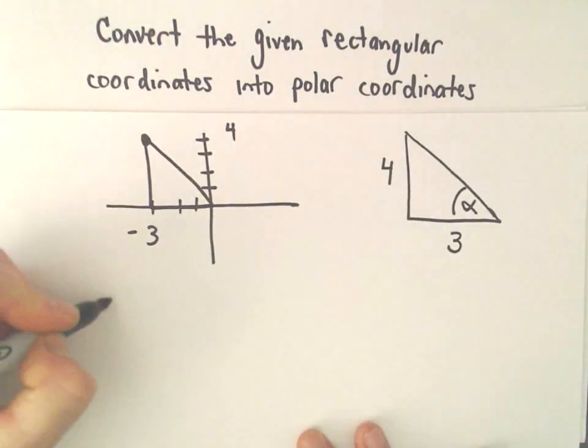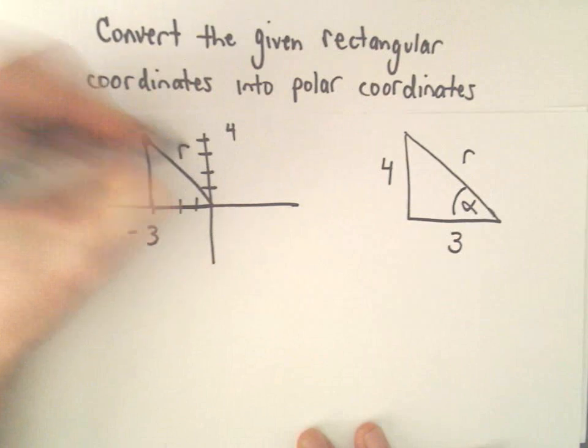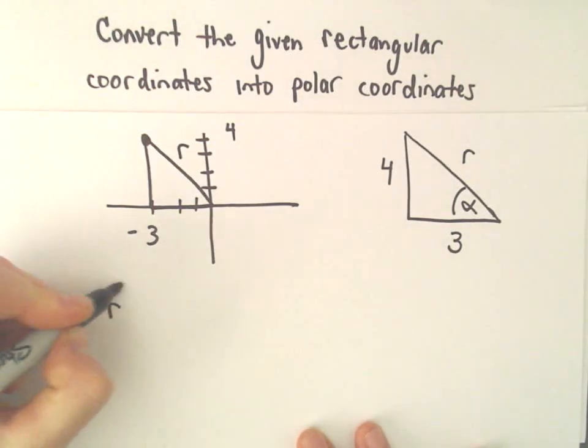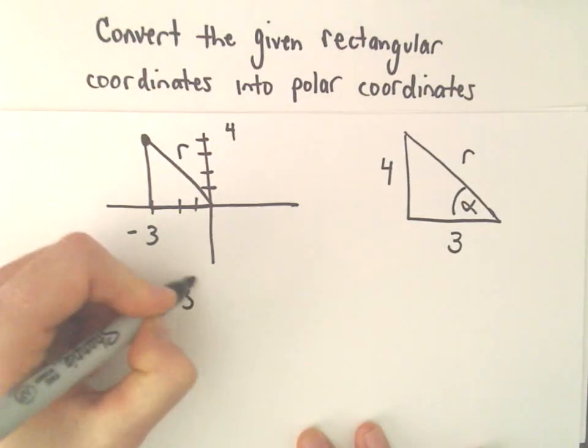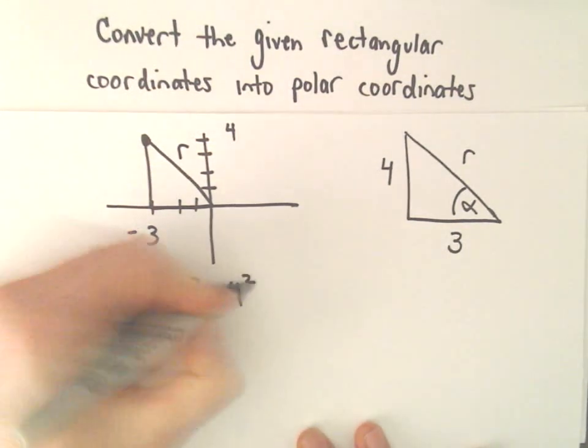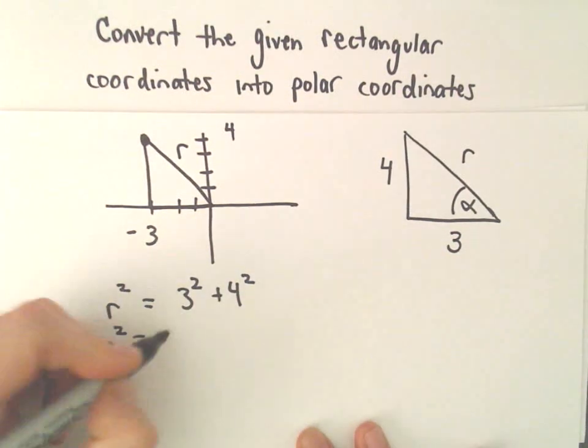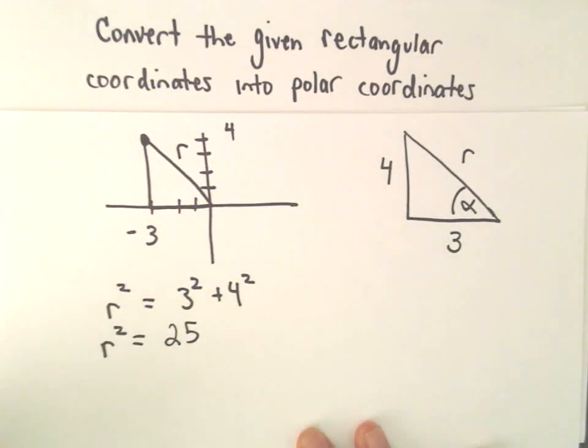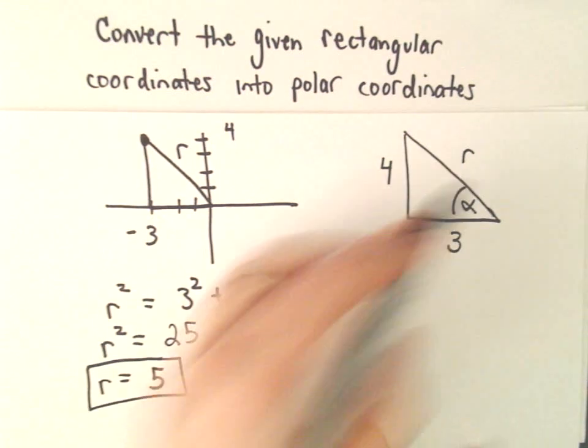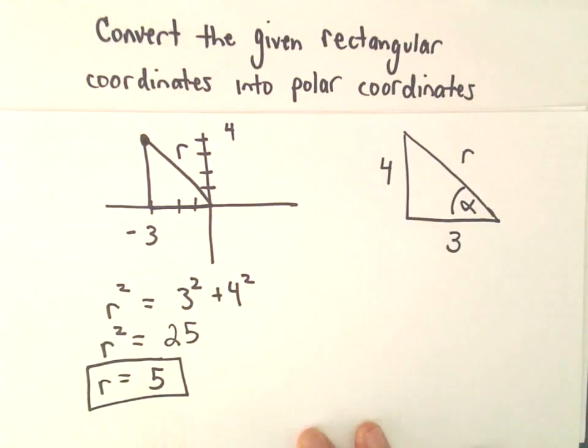Okay, so to get the r value, our r value would be the hypotenuse. Well, r squared would be 3 squared plus 4 squared, just using our formula from a second ago. So that's 9 and 16, which is going to be 25. If we take the square root, technically you get positive and negative 5. But I'm going to use the positive 5. I'm going to make r equal to positive 5 in this case.